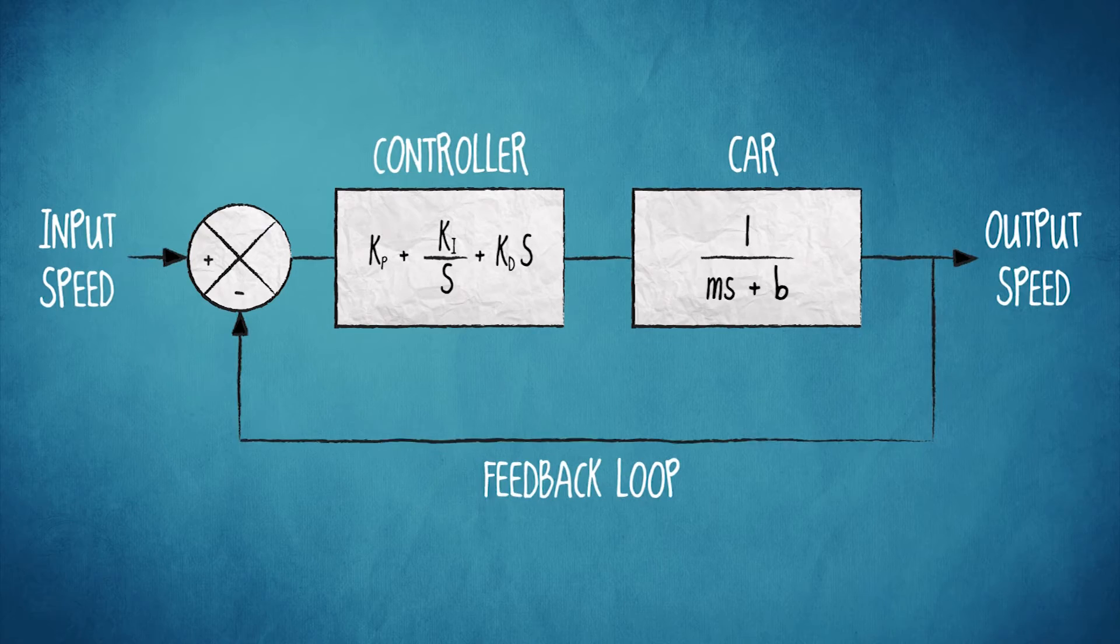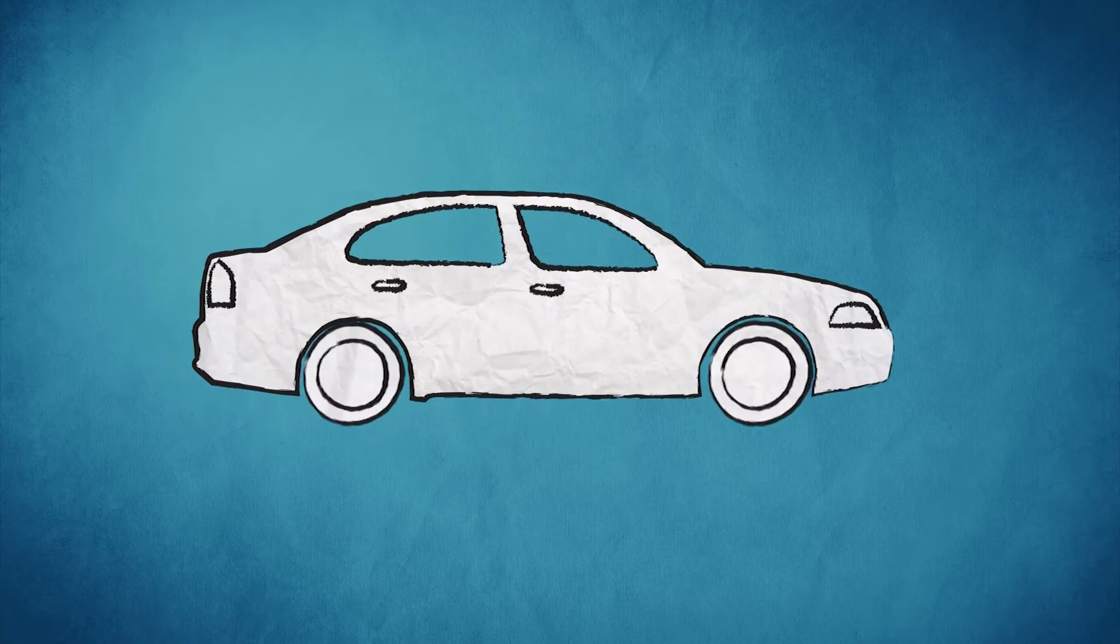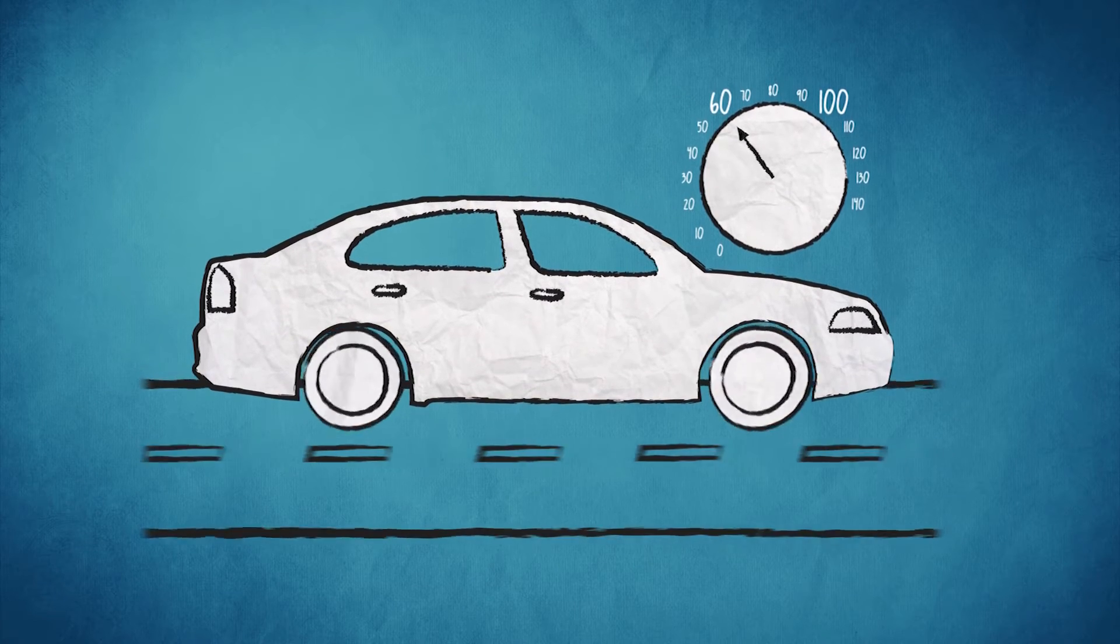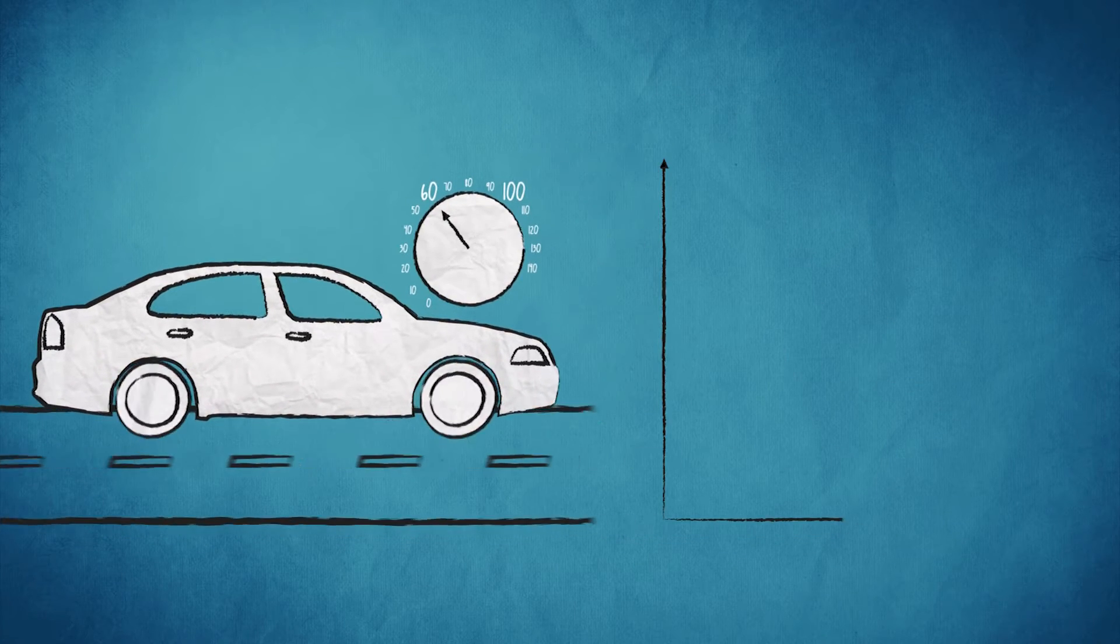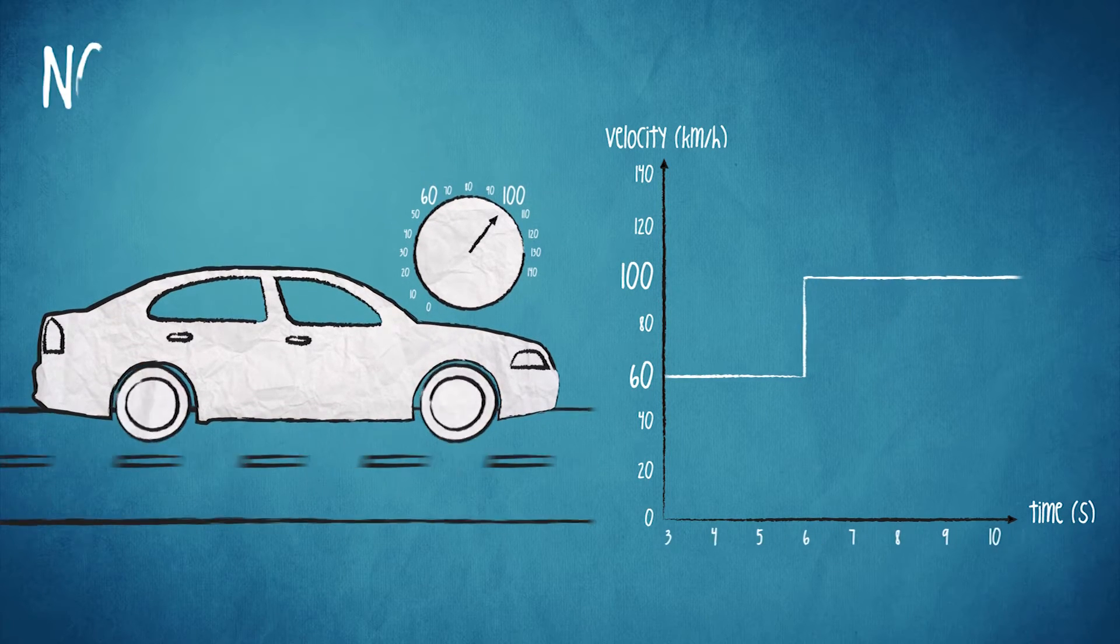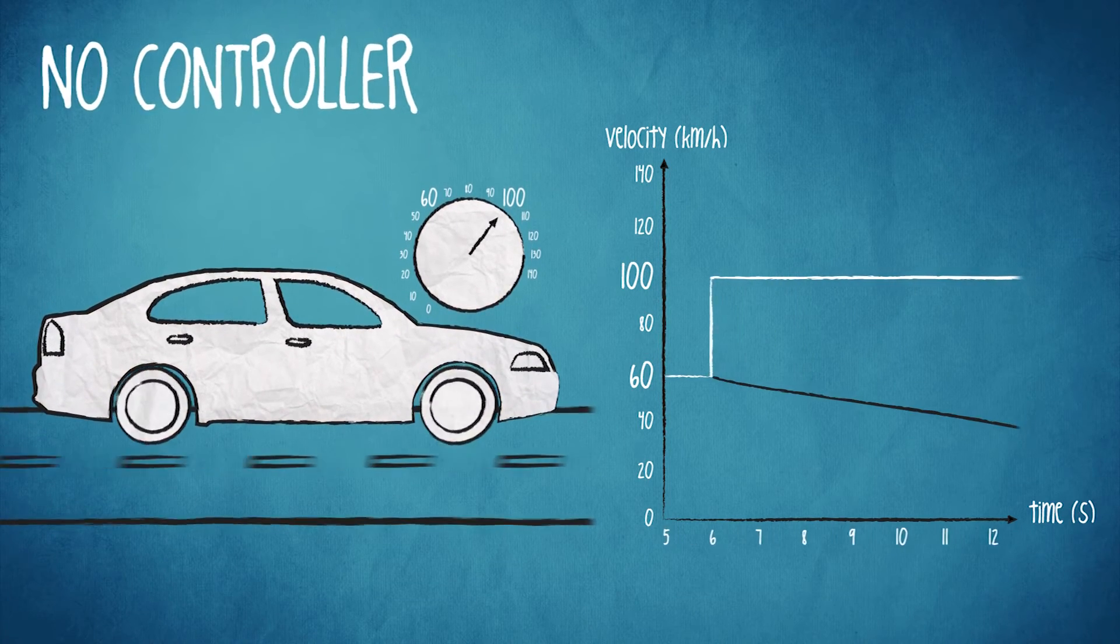But why do we need a controller? Say we have our car traveling down the road at 60 kilometers per hour. We flick on cruise control set to 100 kilometers per hour. A theoretical system would look like this, straight from 60 to 100, but without any controller the system would not function at all.